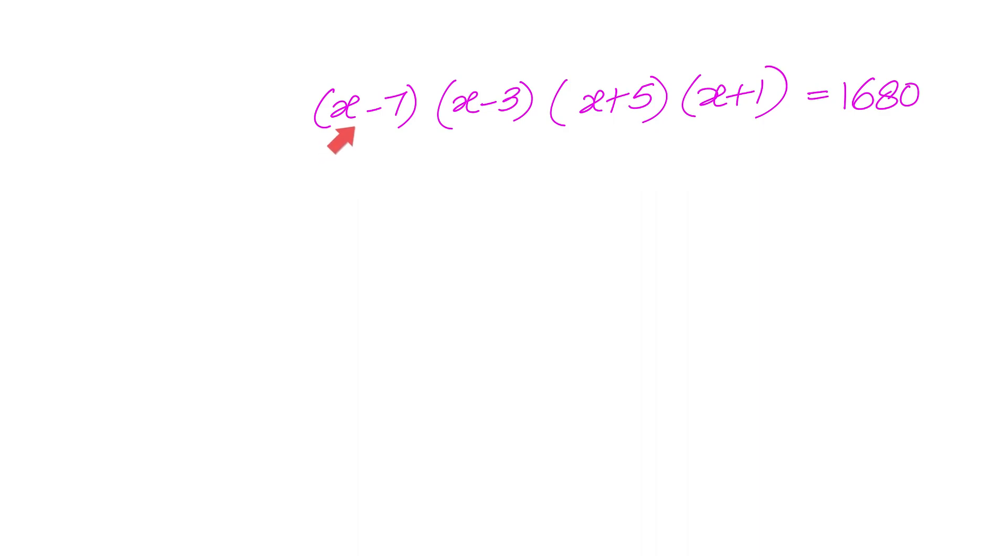We have to find out the value of x if given to us x minus 7 into x minus 3 into x plus 5 into x plus 1 equals to 1680.